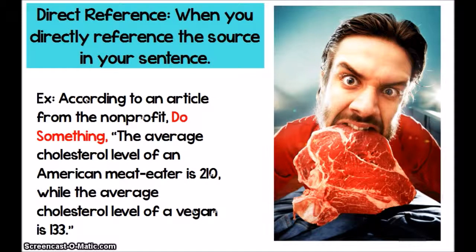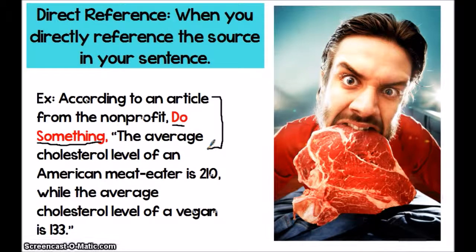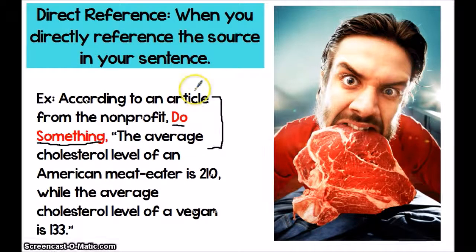A direct reference is when you directly reference the source in your sentence — that is what we just saw when I directly referred to the author Smith as the one who had the theory about the chicken coming before the egg. Here's another example of a direct reference: 'According to an article from the nonprofit Do Something, the average cholesterol level of an American meat eater is 210, while the average cholesterol level of a vegan is 133.' So instead of saving my citation for the parentheses at the end, I'm actually citing the source at the beginning of my quotation, integrating the quote into the sentence by stating the direct reference to where the information came from.